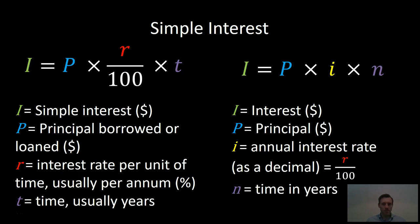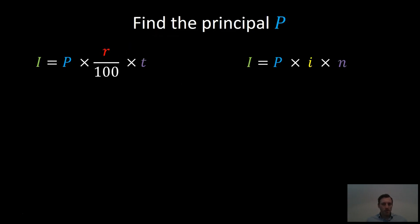In my simple interest video, we reviewed two different formulae for simple interest, and we'll use them both again. The main difference is that the formula on the left includes the conversion of the percentage interest rate to a decimal in the formula, which is R on 100. The formula on the right assumes you've already done this and you're including it as a decimal in the formula. We can use these formulae to solve for variables other than interest if you're confident with algebra. Alternatively, we can use the rearranged formulae.